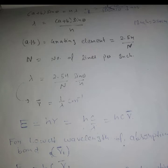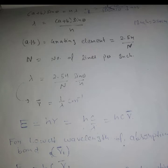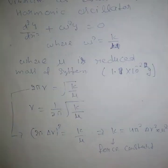Similarly, take the reading of another absorption line of a different color and find its wavelength. The reciprocal of the wavelength is known as the wave number. Take the difference of the wave numbers and put the values into the given formula to find the force constant and the energy of the first excited state of the iodine molecule.